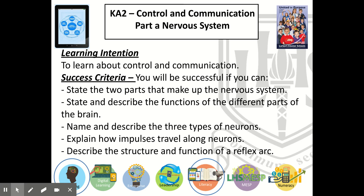That's us finished learning about the part the nervous system plays in controlling communication. I hope you can now state the two parts that make up the nervous system, state and describe the functions of the different parts of the brain, name and describe the three types of neurons, explain how impulses travel along neurons, and describe the structure and function of a reflex arc. Please feel free to go back and watch parts of the video again if you need a refresher. Now please move on to Part B of this topic, which is hormonal control, as a separate video, so that you've fully covered control and communication. Thank you once again for listening.